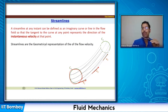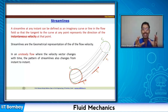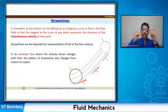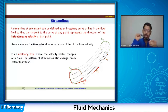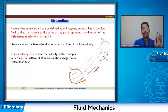In an unsteady flow, the velocity vector changes with time, so the pattern of streamlines changes from one time instant to another. But at a particular time instant, we can define one stream tube. At another time instant, because velocities have changed, the stream tube profile may differ. However, at any given instant it does not change.